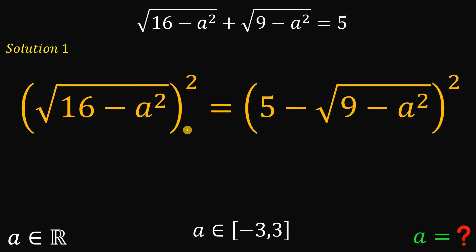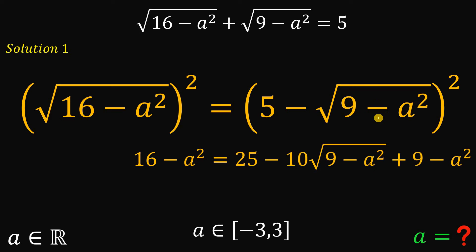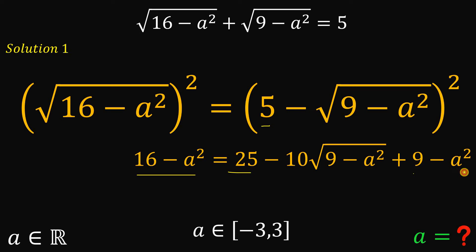On the left-hand side, we have 16 minus A squared. On the right-hand side, we expand 5 minus square root of 9 minus A squared, raised to the power of 2. This gives us 16 minus A squared equals 25, minus 10 times square root of 9 minus A squared, plus 9 minus A squared.